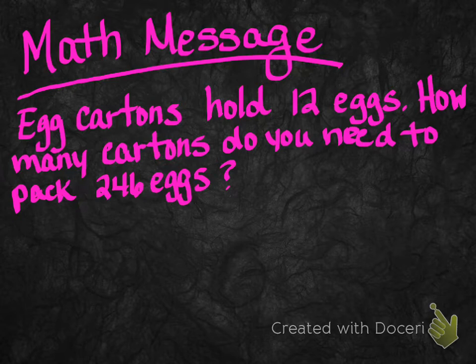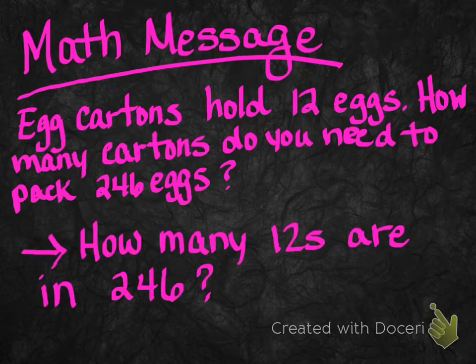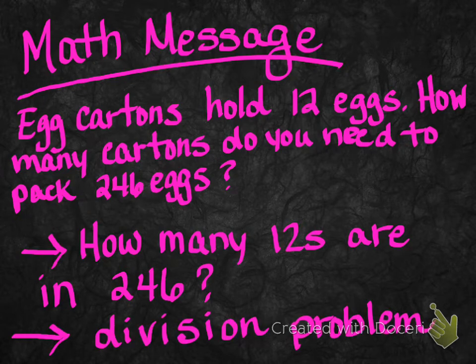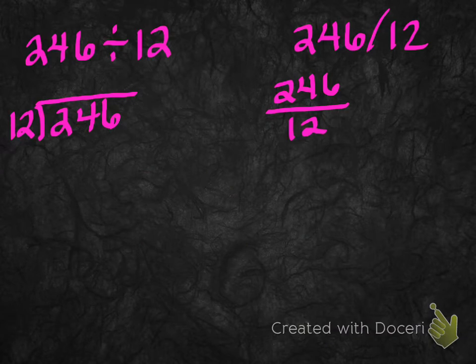So as always there are different strategies that we could use to try to solve this problem. We could draw a picture, we could use base 10 blocks and do some trading, we could use our division algorithm. So what we need to think about is how many 12s are in 246. This is division of course. And these are the four different ways that we could write this particular division problem. All of them say 246 divided by 12, but notice we have different symbols that we use to show that that is a division problem.